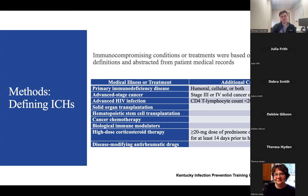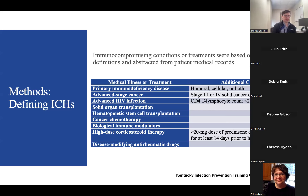For the corticosteroid criteria, we found the equivalent dose for any corticosteroid a patient was on. I want to give a shout-out to our ID pharmacists who helped us determine what high-dose corticosteroid therapy would be. The last criterion was disease-modifying anti-rheumatic drugs. With all these criteria defined, we could identify immunocompromised patients in our CAP hospitalization cohort and calculate a rate.